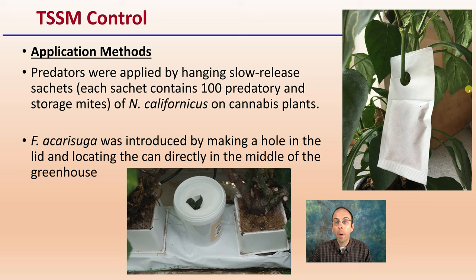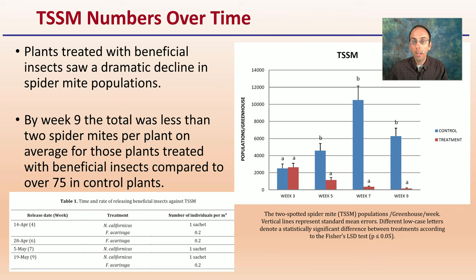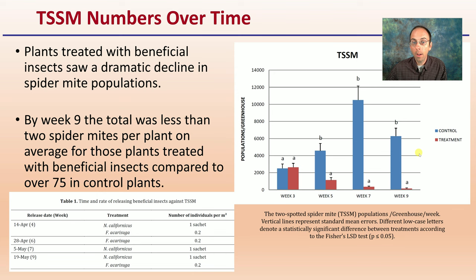Looking at the data from the study, plants treated with beneficial insects saw a dramatic decline in mite populations. The graph shows that at week three, both the control greenhouse (no beneficial insects) and the treatment greenhouse started at around the same level. Spider mites increased dramatically in the control but showed a major decrease in the treatment group. By week nine, there were less than two spider mites per plant on average in the treatment group, compared to over 75 in the control plants — a massive and statistically significant difference.